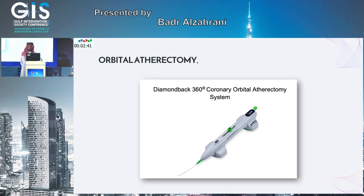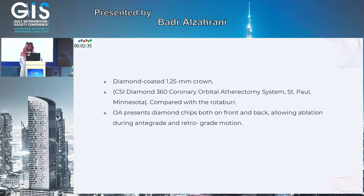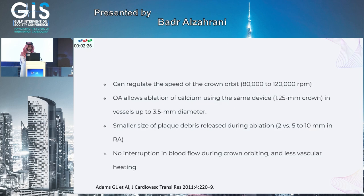Orbital atherectomy uses a 1.25 mm crown allowing ablation in both antegrade and retrograde motion. You can use 80,000 or 120,000 RPMs. It is one size, there is no interruption of blood flow during orbital atherectomy, and it produces less vascular heating.